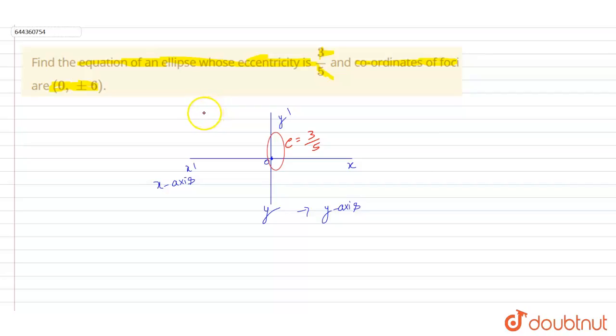So here the question: we have to find the equation of an ellipse whose eccentricity is 3/5 and coordinates of foci are (0, ±6). The foci coordinates lie on the y-axis.